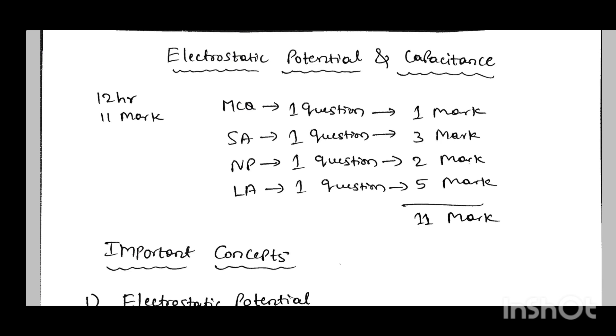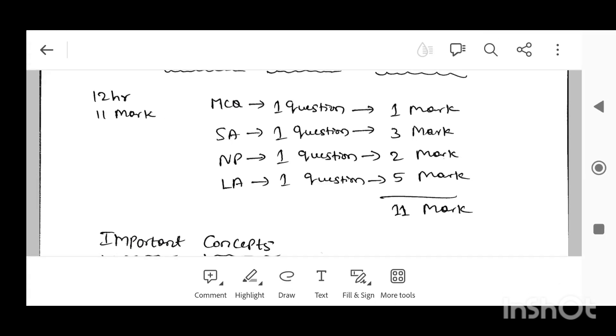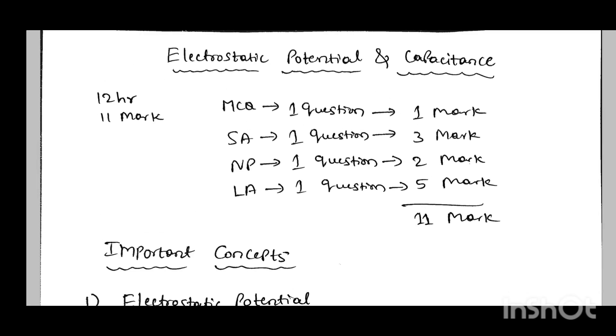First, I will go through the electrostatic potential and capacitance chapter. In this chapter, the total allotted hours is 12 hours and allotted marks is 11 marks. This 11 marks is distributed in several sections.